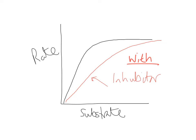So eventually, as you can see, you do actually reach the same maximum rate of reaction if you've got a competitive inhibitor. If you have enough substrate around, you can make more enzyme-substrate complexes than enzyme-inhibitor complexes.